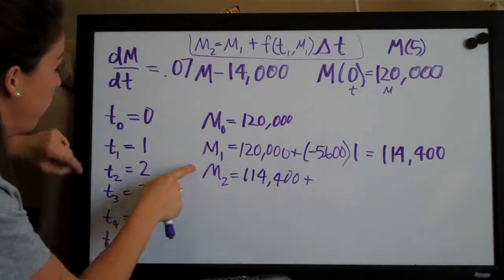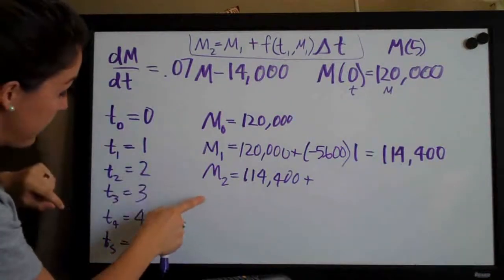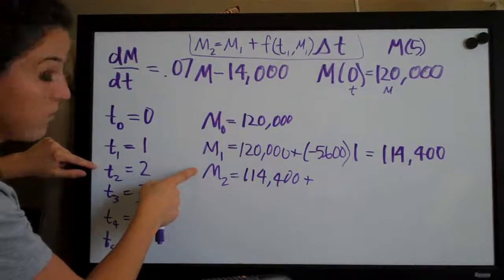Now we're looking for m2, we're going to plug in t1 and m1. When we find m3, we're going to plug in t2 and m2.